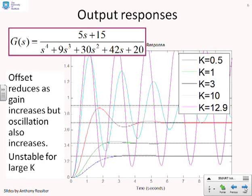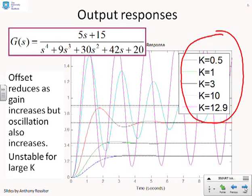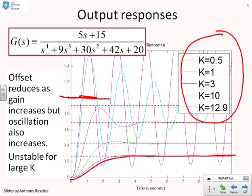Here's an example. We've chosen G(s) = (5s + 15) / (s⁴ + 9s³ + 30s² + 42s + 20), and we close the loop with various proportional compensators: K = 0.5, 1, 3, 10, and 12.9. For K = 0.5, you get a nice smooth response, but you'll notice a very large offset — the target is 1, so we get a huge offset even though otherwise the behaviour looks quite nice.